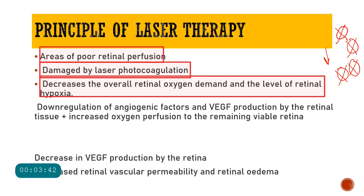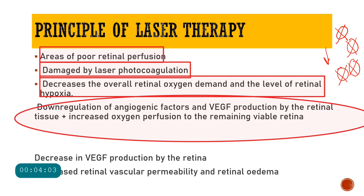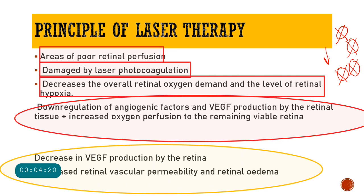Hypoxia and increased oxygen demand lead to increased VEGF production and increased angiogenic factors. Since we have destroyed the areas of poor retinal perfusion — the hypoxic areas — they no longer need any oxygen. This causes downregulation of angiogenic factors and VEGF. The remaining viable retina with normal perfusion receives increased oxygen, further decreasing VEGF production, reducing neovascularization, decreasing vascular permeability, and reducing retinal edema.